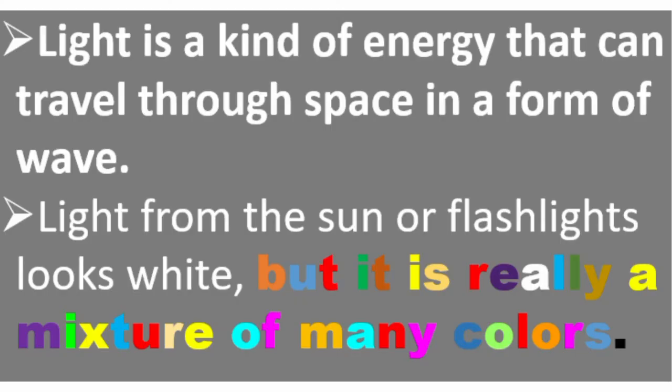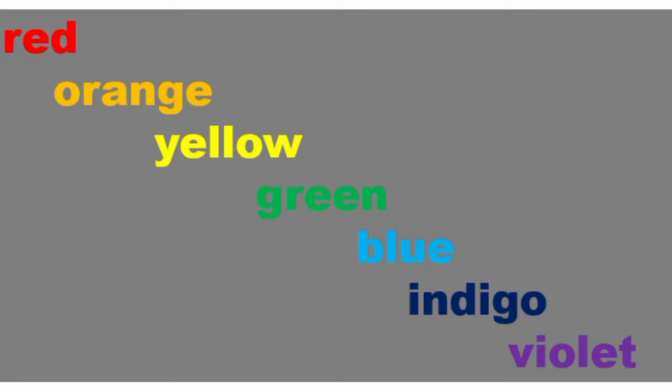Light is a kind of energy that can travel through space in a form of wave. Light from the sun or flashlights looks white, but it is really a mixture of many colors.